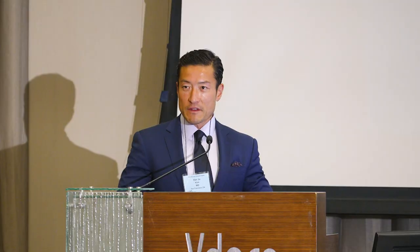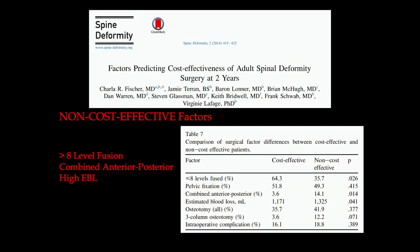This was a review of 55,000 what they called spinal deformity operations — really greater than four levels of fusion collated through the database. Other predictors of cost effectiveness include not only length of stay, but larger fusions. Patients who had greater than eight levels of fusion, anterior as well as posterior surgery, and patients with high EBL — and to a certain extent, these things are all related to each other.